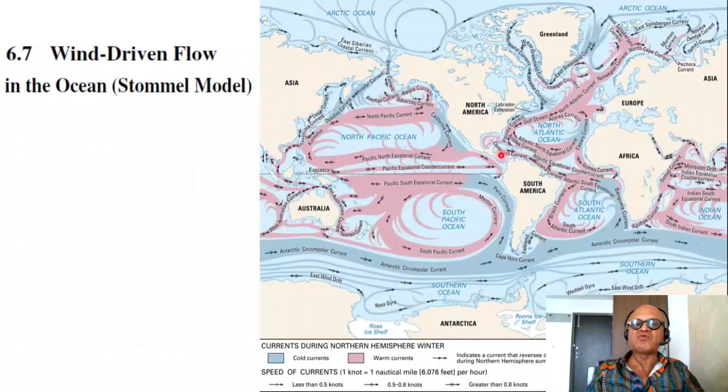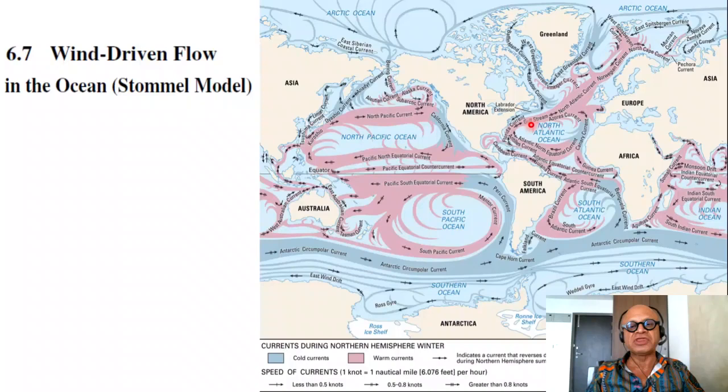Coming back to what Stommel did, imagine that now we know so much about the western boundary currents, western boundary intensifications, their role in the heat transport, Atlantic meridional overturning circulation, thermohaline circulation, and so on and so forth. Till 1940s, people didn't know exactly why there was intensification on the west, even though they knew that such currents existed.